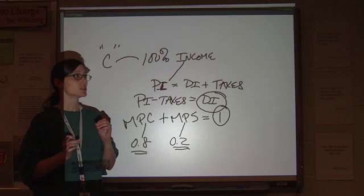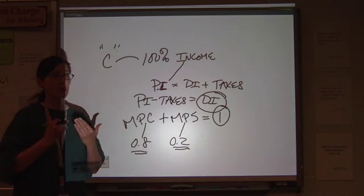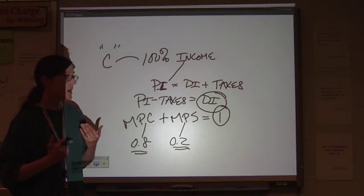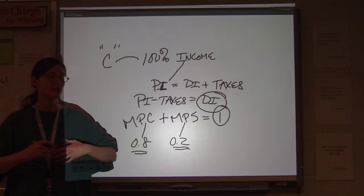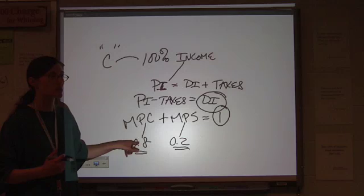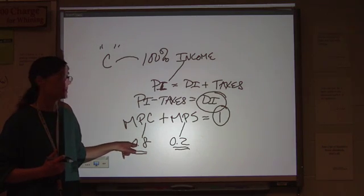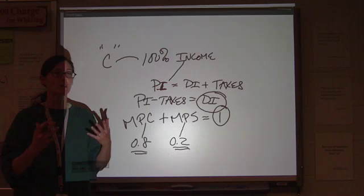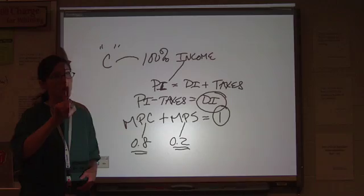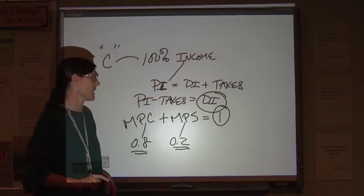So if the government gives the American people a billion dollar tax cut, then they're not going to go out and spend that billion dollars. They're only going to spend about 80% of it. But what does that do to our increase in total spending? There's one other component here that we have to consider.